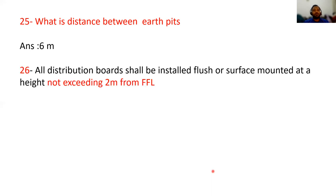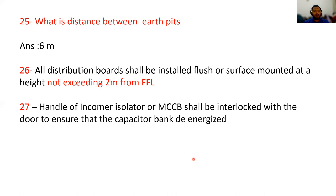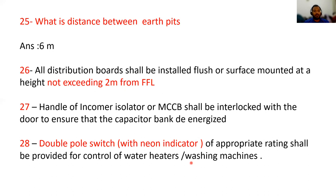Question 25: the distance between earth pits is equal to 6 meters. All distribution boards shall be installed flush or surface mounted at a height not exceeding 2 meters from the finished floor level. The handle of the incomer isolator or MCCB shall be interlocked with the door to ensure the capacitor bank is de-energized.